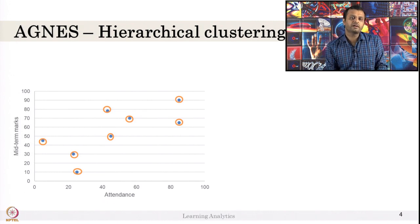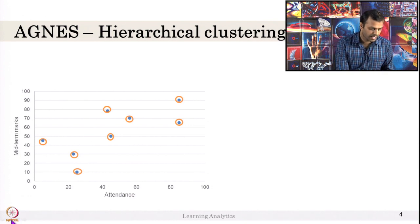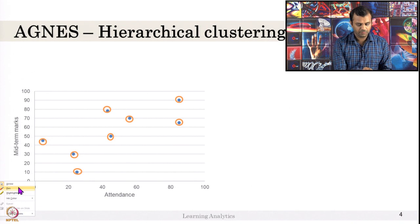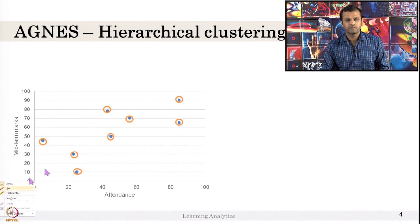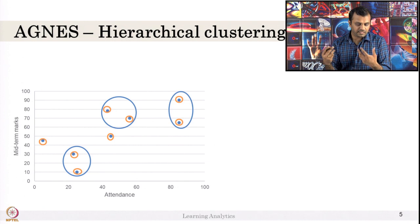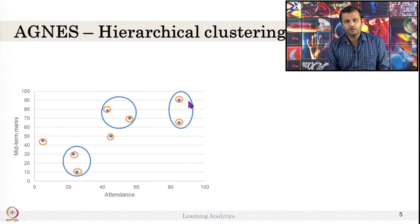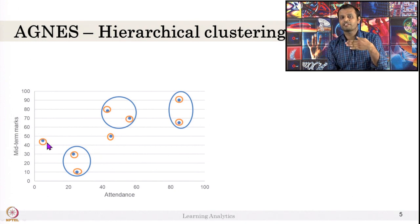In the first step, every data point is considered as its own cluster, so we start with 8 clusters. In step 2, we merge the most similar data points. By some similarity measure, certain pairs are more similar, forming new clusters. So now we have 5 clusters after step 2.